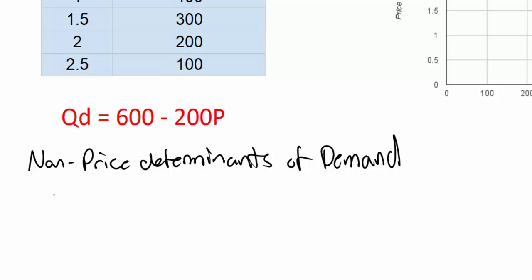And the acronym that I taught you to help you remember those non-price determinants of demand was TOEISS. I'm not going to go through what all these letters stand for again today, but I will remind you quickly.